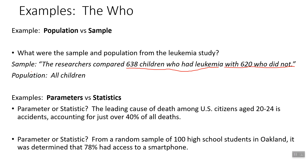Now that we can tell the difference between a sample and a population, let's figure out if something is a parameter — meaning it goes with a population — or a statistic — meaning it goes with a sample. The leading cause of death among U.S. citizens aged 20 to 24 is accidents, accounting for just over 40 percent of all deaths. We looked at all U.S. citizens in a certain age range — so that's our population. And since it's talking about a population, the 40 percent figure is a parameter.